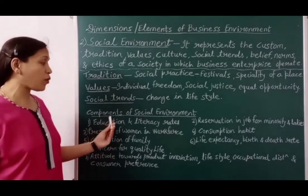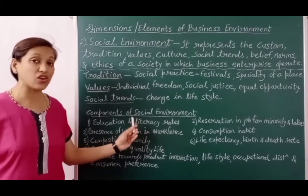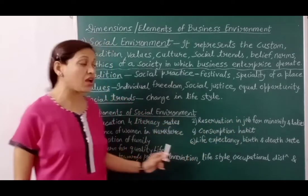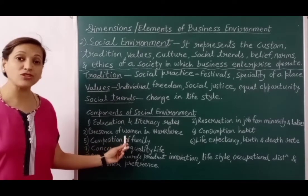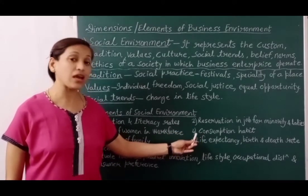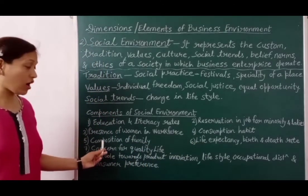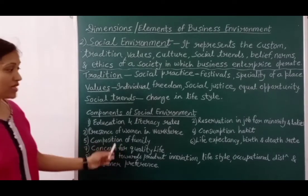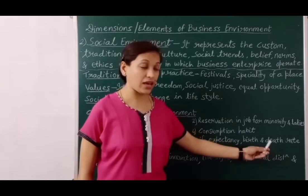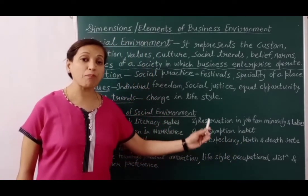Let's understand social environment with an example. Due to educational awareness, literacy rate among women has increased. In education, employment and politics, some seats are reserved for minority sections and ladies. Every organization gives women equal right to work. With increased income, their consumption habits have changed — they now demand more formal wear, cosmetics, packed food and electronic gadgets. Joint families are being replaced by nuclear families. Life expectancy has increased and death rate has decreased, while birth rate has also fallen due to family planning awareness and government population control campaigns.